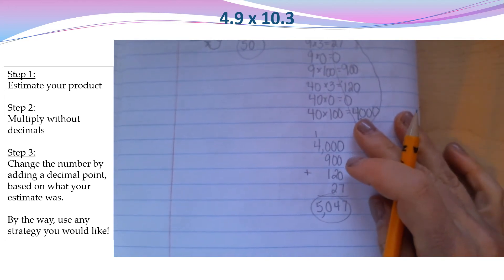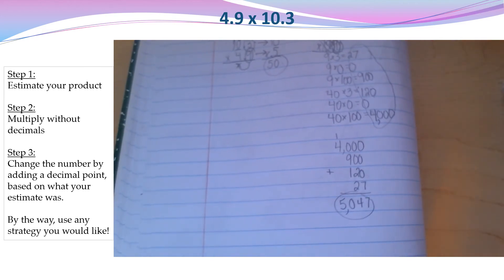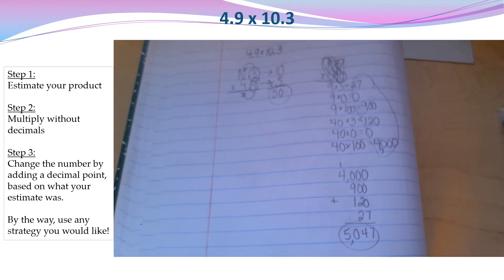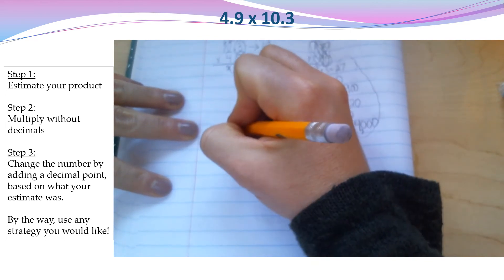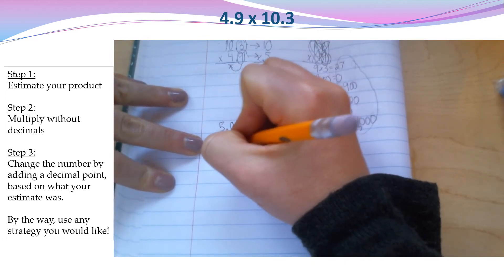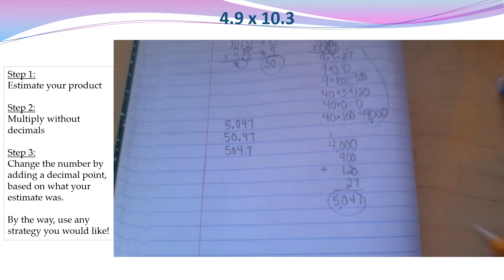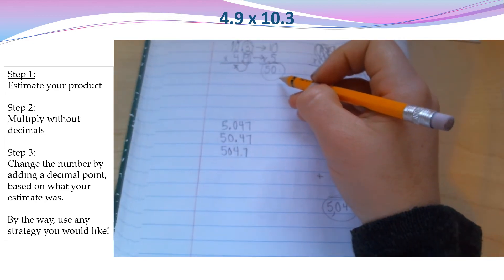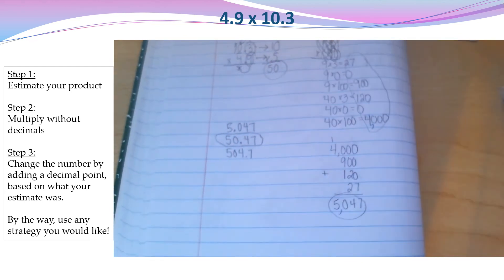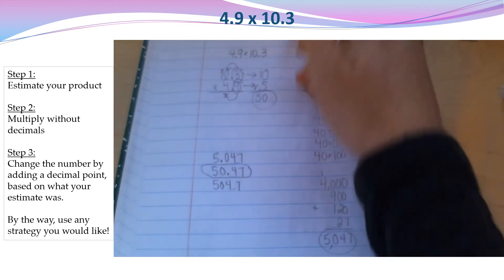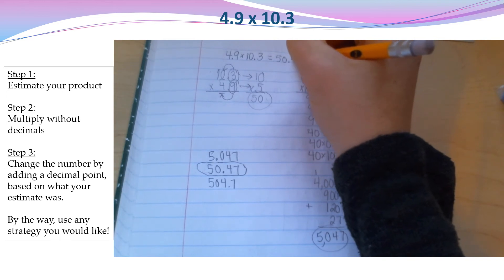Obviously that doesn't make a whole lot of sense when we want our answer to be close to fifty. So where am I going to put the decimal point? Is it five and forty-seven thousandths? Fifty and forty-seven hundredths? Five hundredths? Five hundred four and seven-tenths? Which one makes the most sense if our estimate was fifty? If you picked fifty and forty-seven hundredths, you're correct. So four and nine-tenths times ten and three-tenths is fifty and forty-seven hundredths.